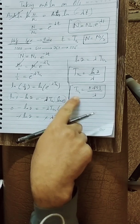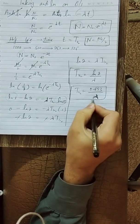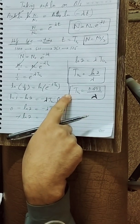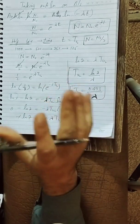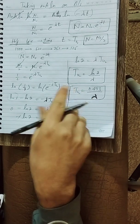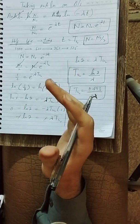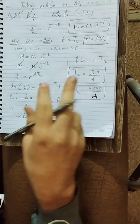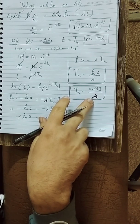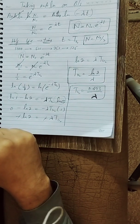Half-life depends on lambda, which depends on the nature of the material. If the nucleus is more stable, lambda is smaller and half-life is very large. If the sample is very unstable, lambda is very large and half-life is very small. So half-life depends upon the stability of the nucleus.